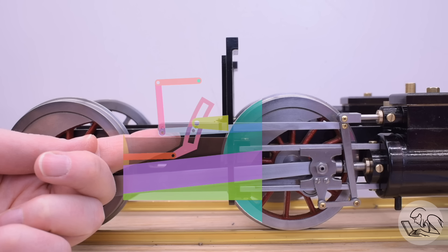The first piece of this assembly to build are the link blocks, and these are little bronze blocks that ride up and down in that curved slot.